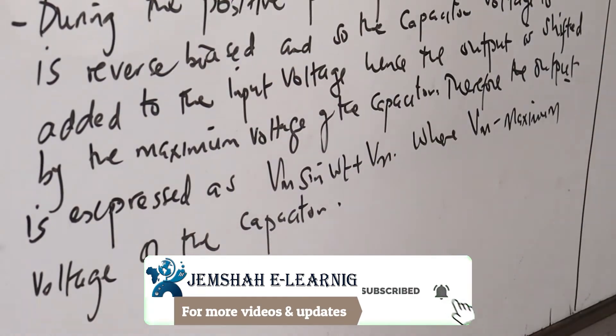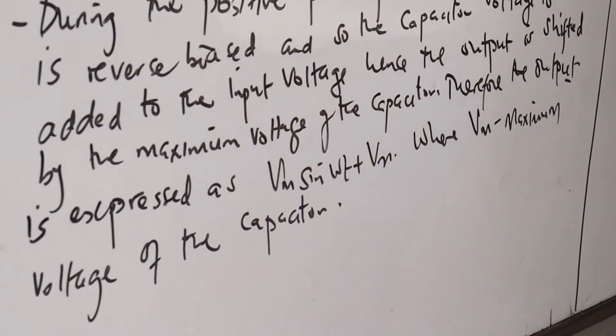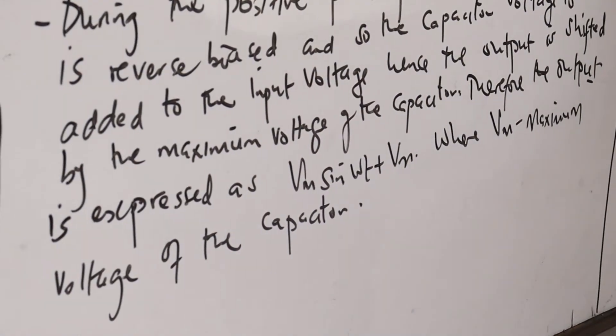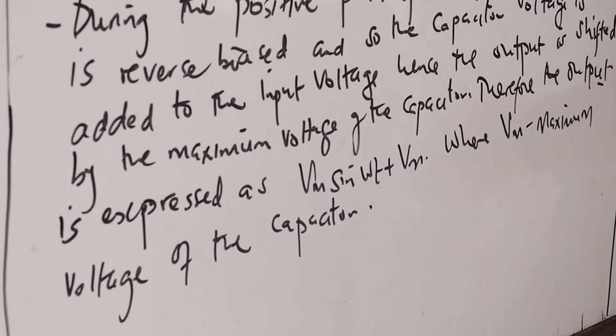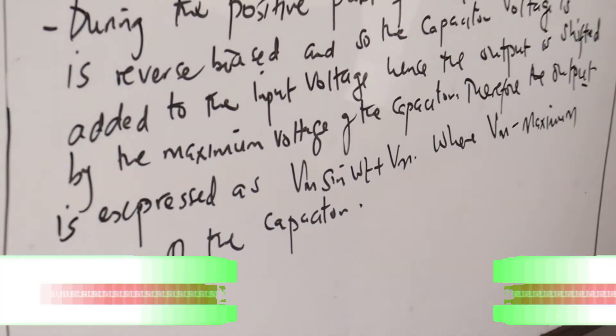During the negative part of the sine wave input, the diode is forward biased and the capacitor charges to the maximum supply voltage. During the positive part of the sine wave, the diode is reverse biased and the capacitor voltage is added to the input voltage, hence the output voltage is shifted by the maximum voltage of the capacitor. The output is expressed as Vm sine of omega t plus Vm, where Vm is the maximum voltage of the capacitor.